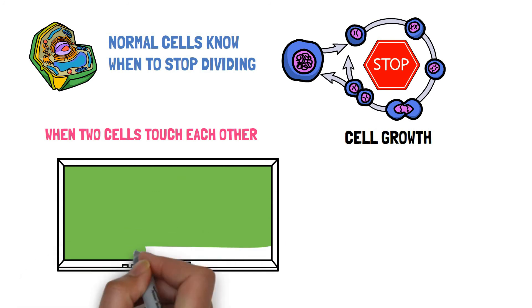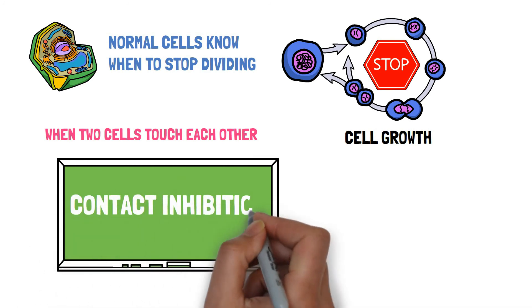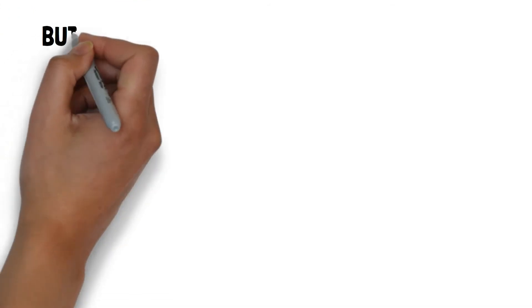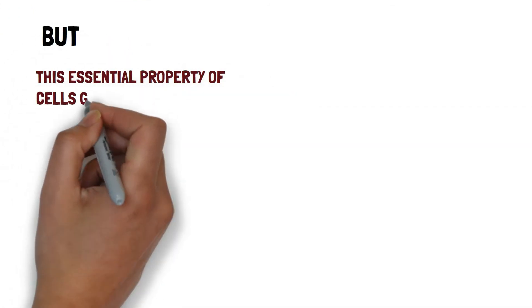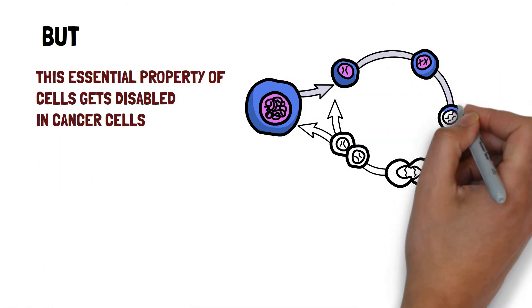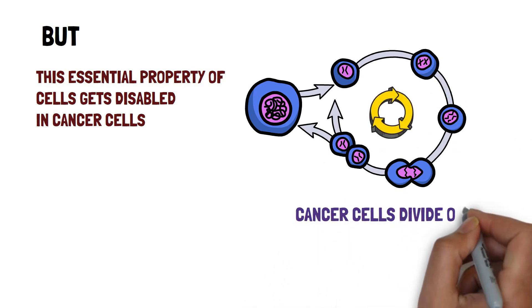This process where neighboring cells inhibit cell division through sensing each other's cell membrane is called as contact inhibition but in cancer cells this essential property of contact inhibition gets disabled and the cell division goes on forever.